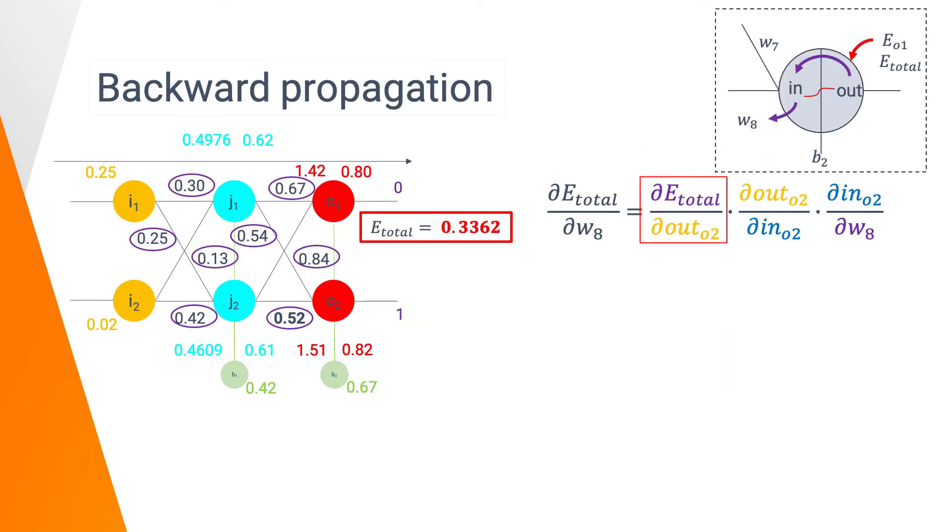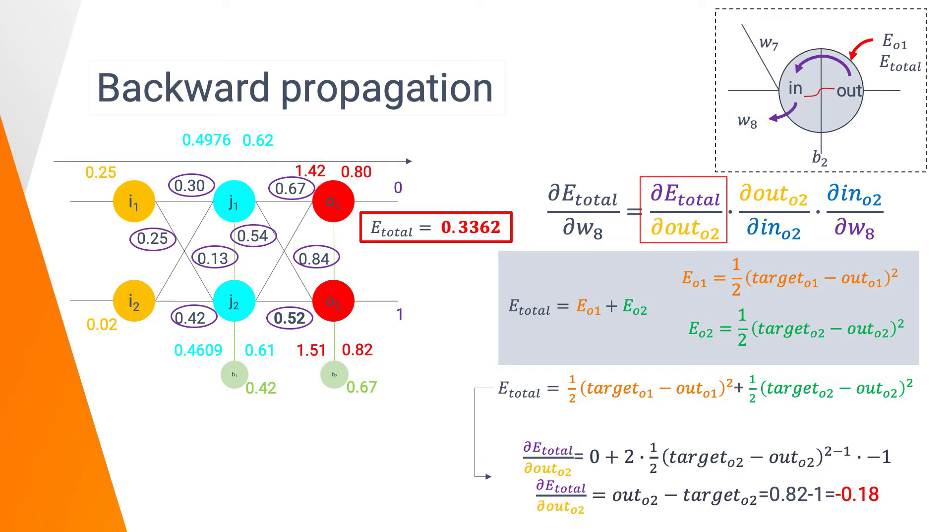For the first part, we had previously defined the error of O1 and O2 and we defined the total error as the sum of the O1 error and the O2 error. So, we can derivate this formula with respect to the output of O2. And we got only terms where O2 appears. Do not hesitate to pause the video and to calculate on your own this derivative function. Here, we got as value minus 0.18.